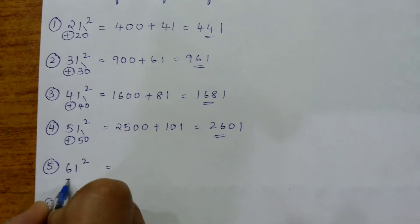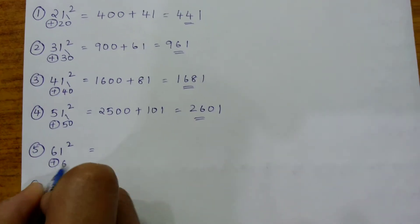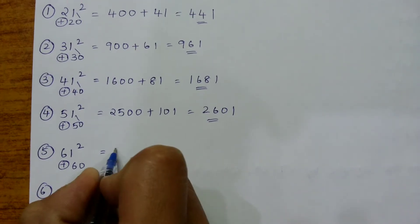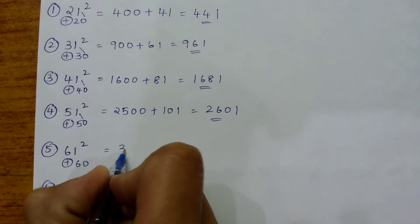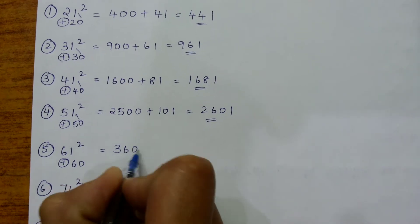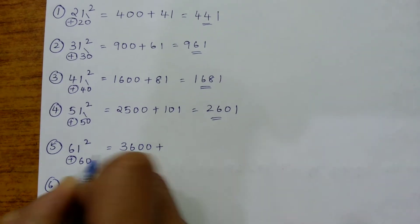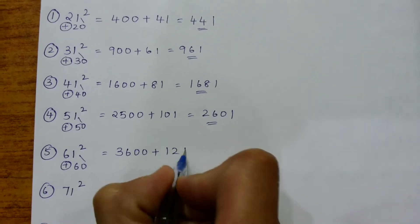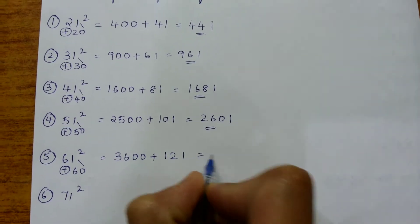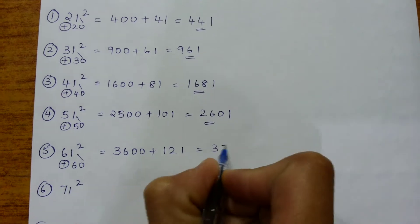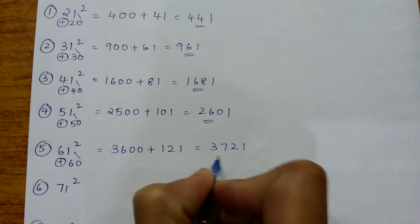61 square is one more than 60. That is 60 square, which we all know is 3600, plus 60 plus 61, that is 121, which equals 3721.